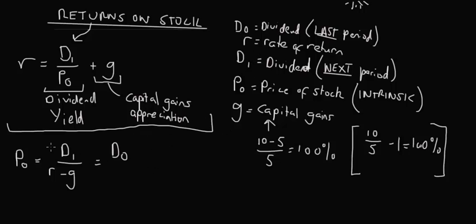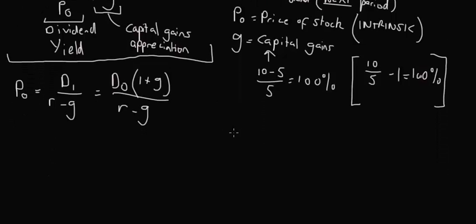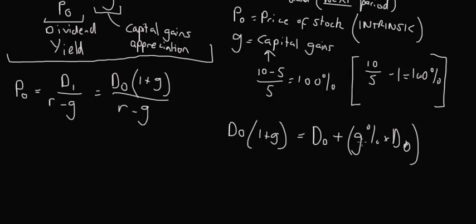Okay, so let's get back here. This P0 equals D1 over R minus G is actually the same as saying D0 times 1 plus G over R minus G. And you should be able to see why that's exactly the same thing, but if not, then let me just spell it out for you. D0 times 1 is just D0, so that's the dividend that we got last period, plus D0 times G. So it's the growth rate as a percentage multiplied by D0. So we actually have whatever the dividend was last period plus some growth rate, i.e. the growth rate at which this common stock dividend is growing. So this actually does come out to D1. So you should see now that D0 times 1 plus G is actually the same as D1.